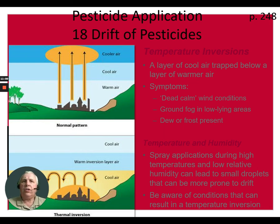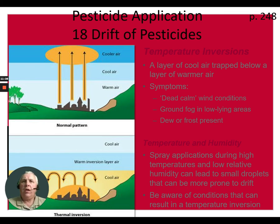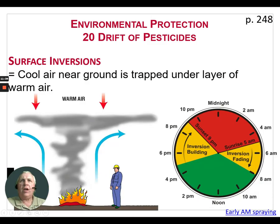Be aware of those conditions and the results of temperature inversions, because there is a very high likelihood of droplets remaining suspended for a long period of time. Once suspended, you really don't know where they may go. Wind could change direction and carry them to an adjacent crop, causing damage, or into a non-crop area, water, or many other bad scenarios. Never spray when it's dead calm.